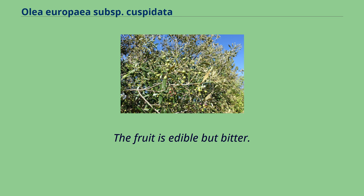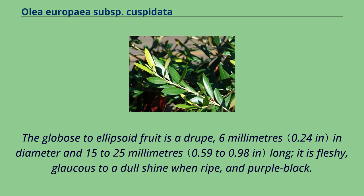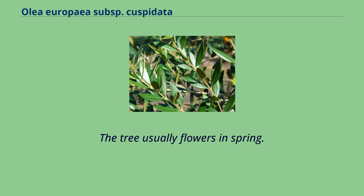The fruit is edible but bitter. The globose to ellipsoid fruit is a drupe, 6 millimeters in diameter and 15 to 25 millimeters long. It is fleshy, glaucous to a dull shine when ripe, and purple-black. The tree usually flowers in spring.